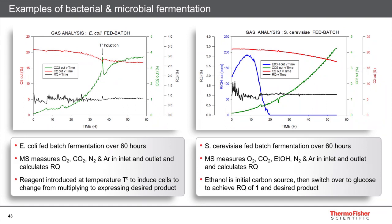Similarly, in a Pichia pastoris fed-batch fermentation — again approximately 60 hours — the mass spectrometer monitors air gases and also ethanol. Ethanol is the initial carbon source, and after approximately 10 to 15 hours the ethanol source is depleted, and cells begin to switch to consuming glucose. This is observed in the respiratory quotients settling to the expected value of approximately 1. In both cases, the mass spectrometer validates that the process is proceeding according to expectations.